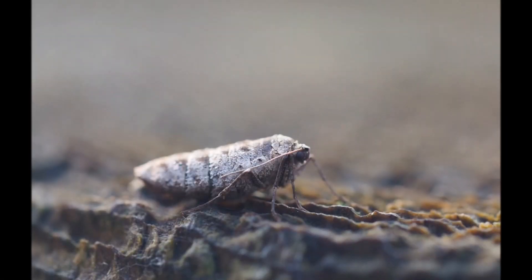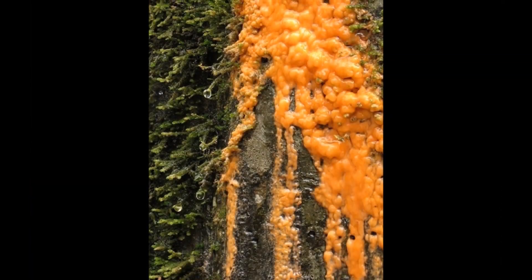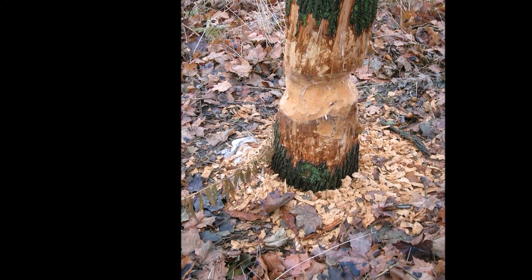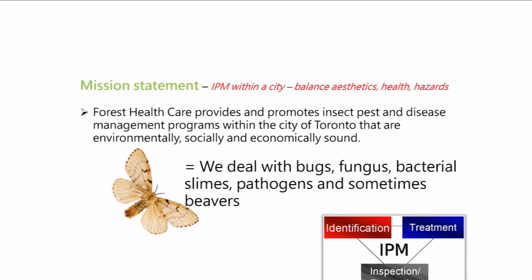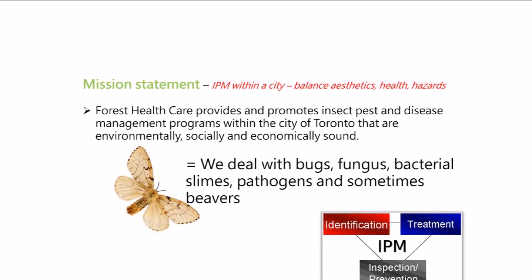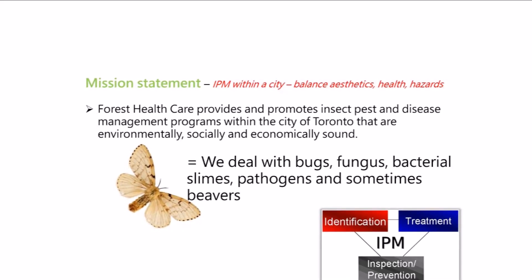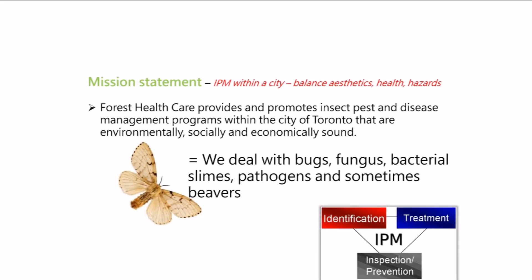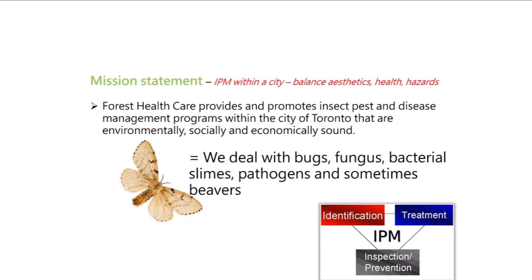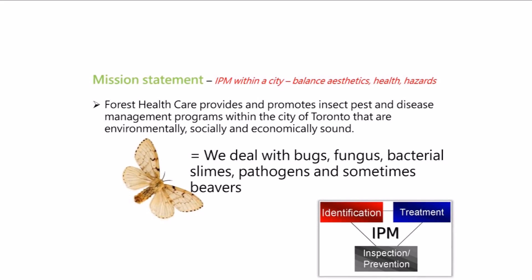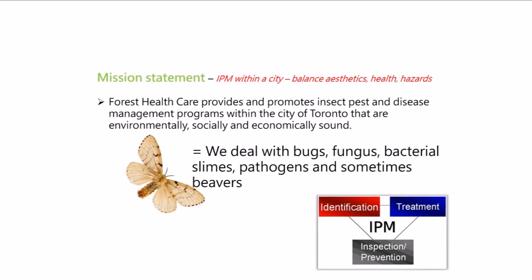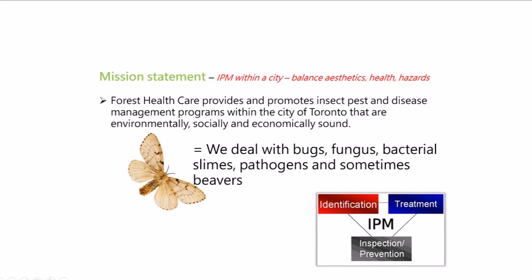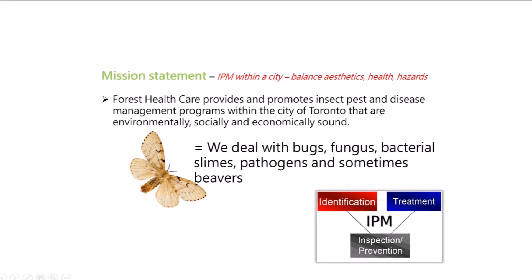In short, we deal with a variety of bugs, fungi, bacteria, and human and animal damage to trees. Identification, treatment method, monitoring and prevention are the basic concepts of IPM. In this model, eradication of a pest is not the end goal; rather a balance or threshold is targeted at which a pest or pathogen is kept at to minimize damage to trees. This is core to how we manage Gypsy Moth in Toronto.